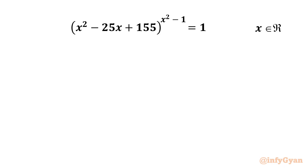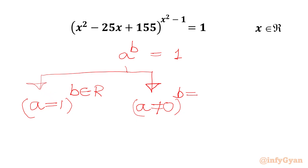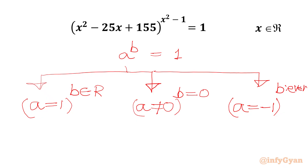Let's get started by writing three conditions for the function a to the power b equal to 1. If we have this form, we can consider three cases. Case 1: the base is equal to 1 with a real power. Case 2: the base cannot be 0 but the power should be 0. Case 3: the base is equal to negative 1 with an even power.